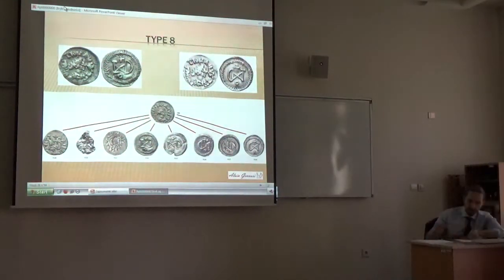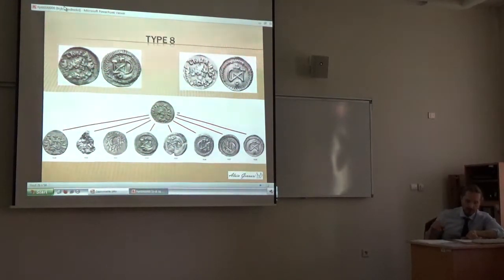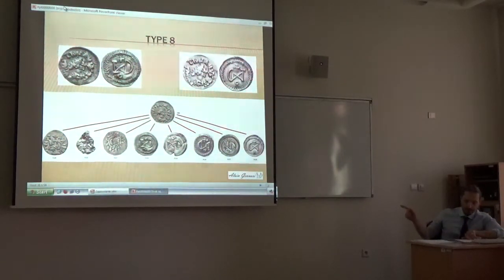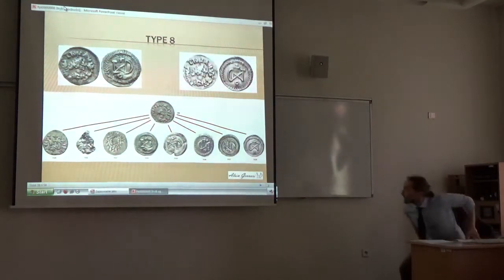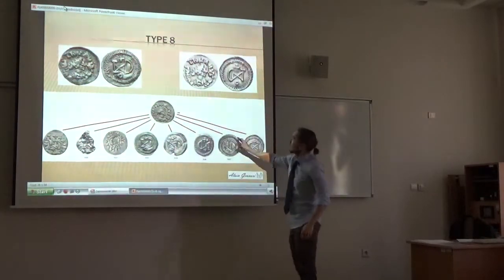Type 8 is a quarter siliqua in the name of Justinian I with an epigraphic reverse, like Type 6 in the name of Justin I. Only 12 specimens in my database. These coins are closely related to Type 7 because of the O98 obverse die, as you can see in the picture, and closely related to Type 6 because of the general style of the reverse. Here you can see this direct die-link between Type 7 and Type 8.